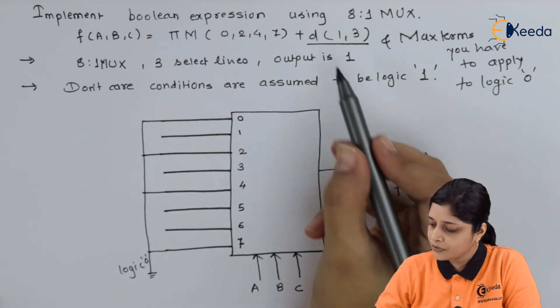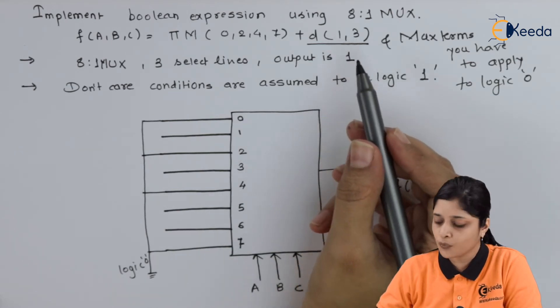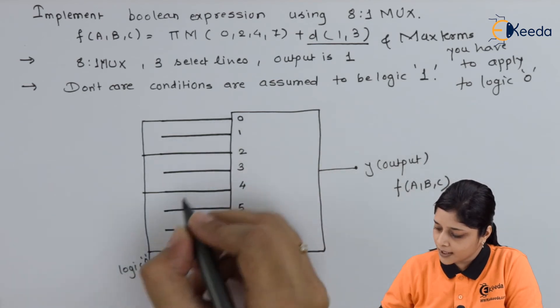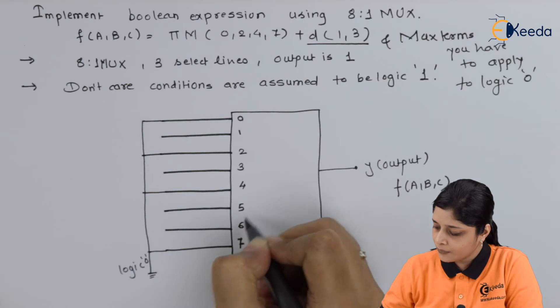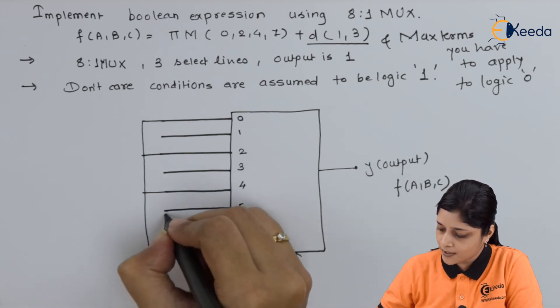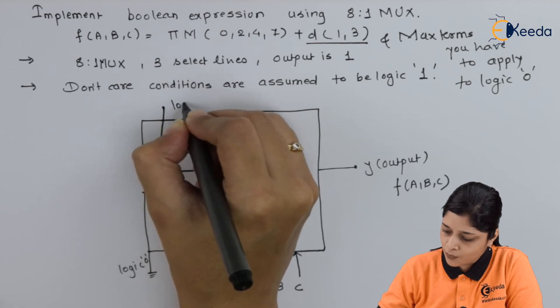After that you have to collect don't care conditions and remaining terms to logic 1. So we will connect 1, 3 and 5, 6. All these terms we are going to connect to logic 1.